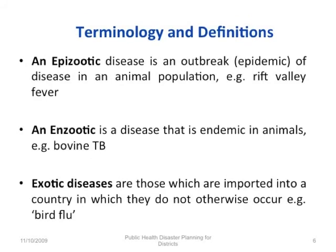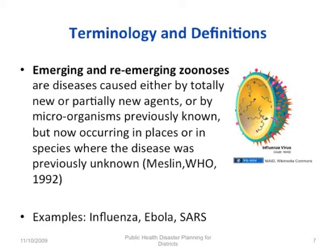An epizoonotic disease is an outbreak or epidemic of disease in an animal population. An enzootic disease is a disease that is endemic in animals. Exotic diseases are those which are imported into a country in which they do not otherwise occur — an example is avian influenza. Emerging and re-emerging zoonoses are diseases caused either by totally new or partially new agents, or by microorganisms previously known but now occurring in places or in species where the disease was previously unknown.